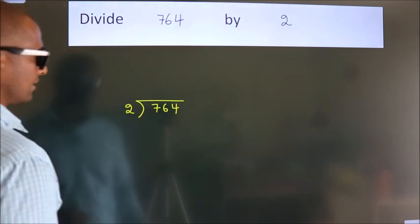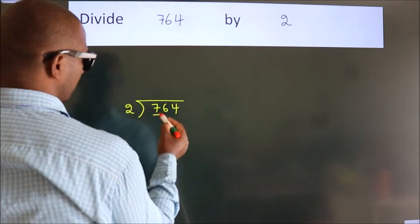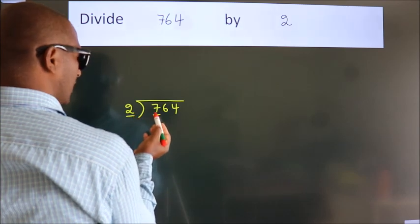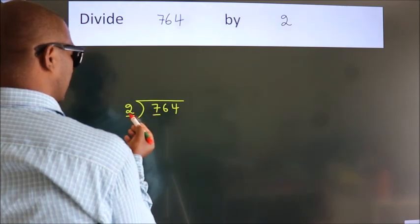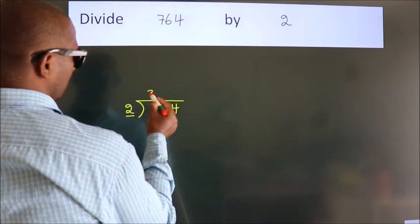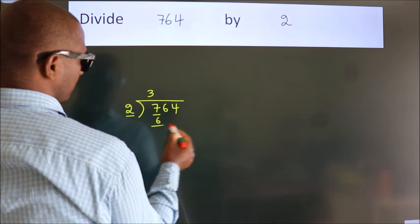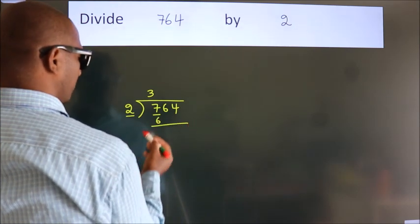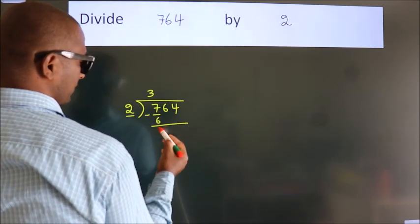Next, here we have 7, here 2. A number close to 7 in the 2 table is 2 threes, 6. Now we should subtract. We get 1.